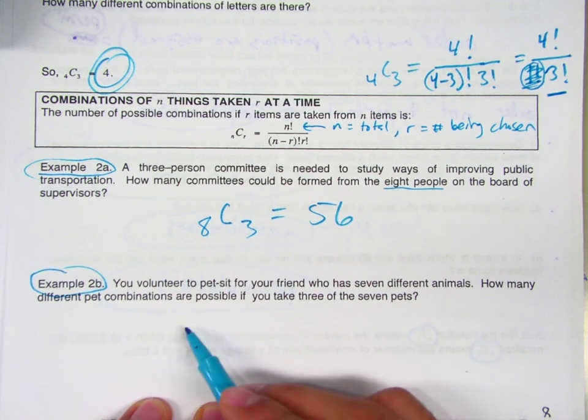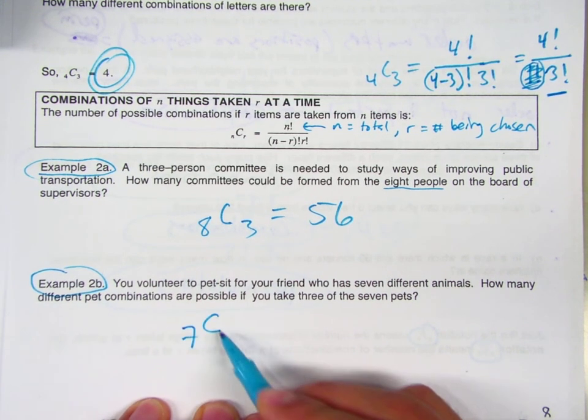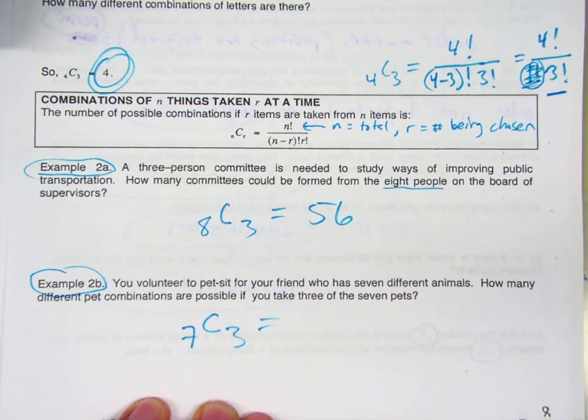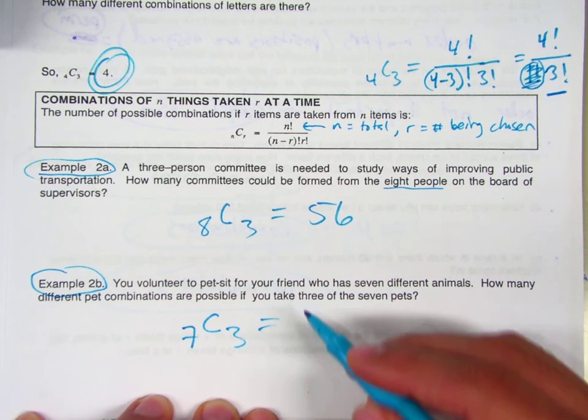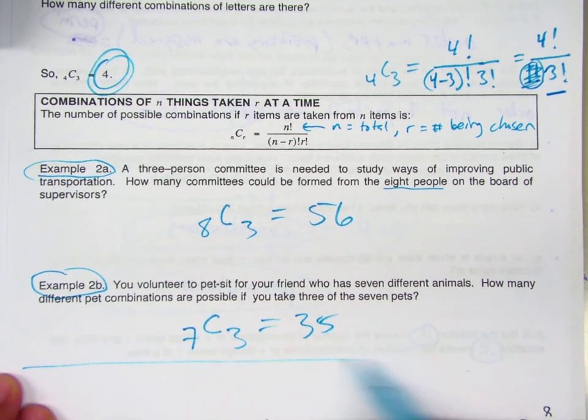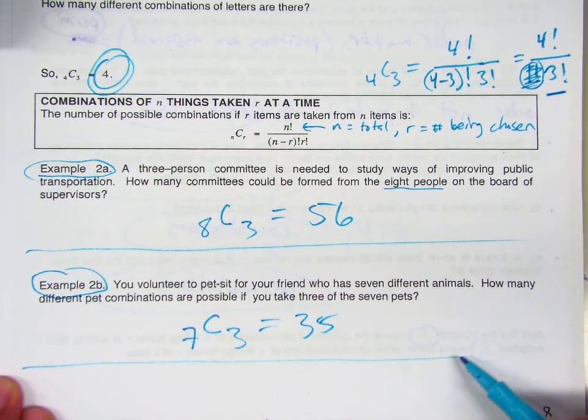So this would be how many total? Seven. Choose three. What is that going to be? Thirty-five.